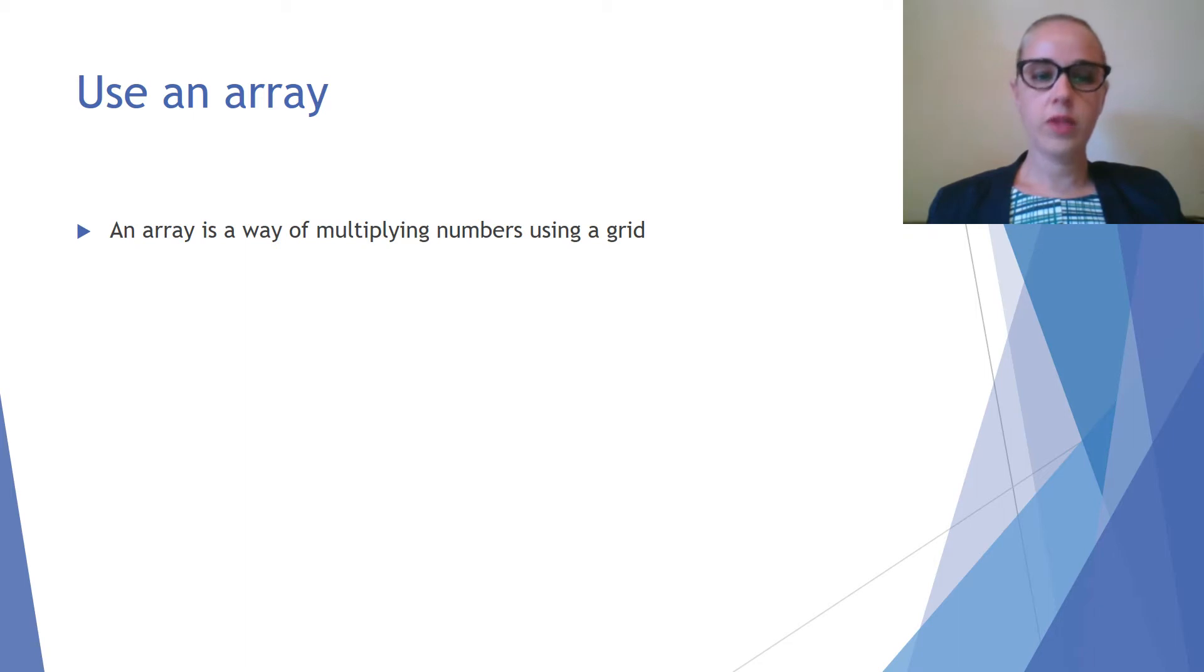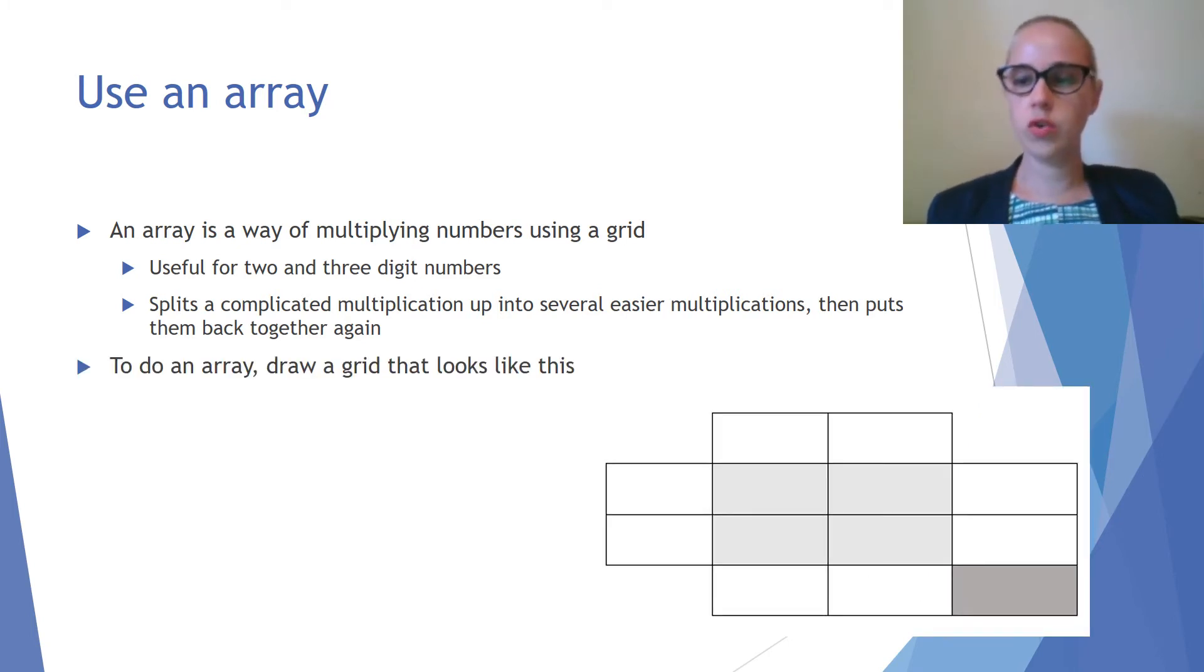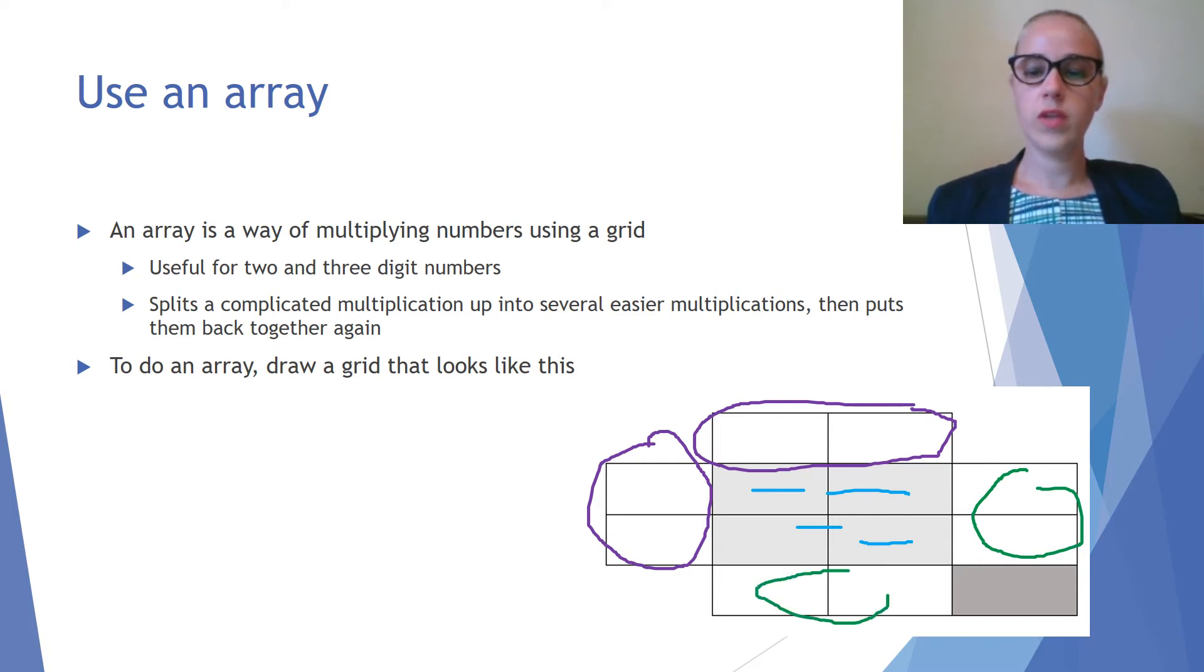We can also use an array. An array is a way of multiplying numbers using a grid. It's especially useful for multiplying two and three digit numbers together. It splits a complicated multiplication up into several easier multiplications and then puts them back together again. To do an array, you need to draw a grid. For two two-digit numbers, you would split two digits up there and two digits up there. All your multiplications happen into these boxes, then you do the additions and add those up to reach the answer in this box.